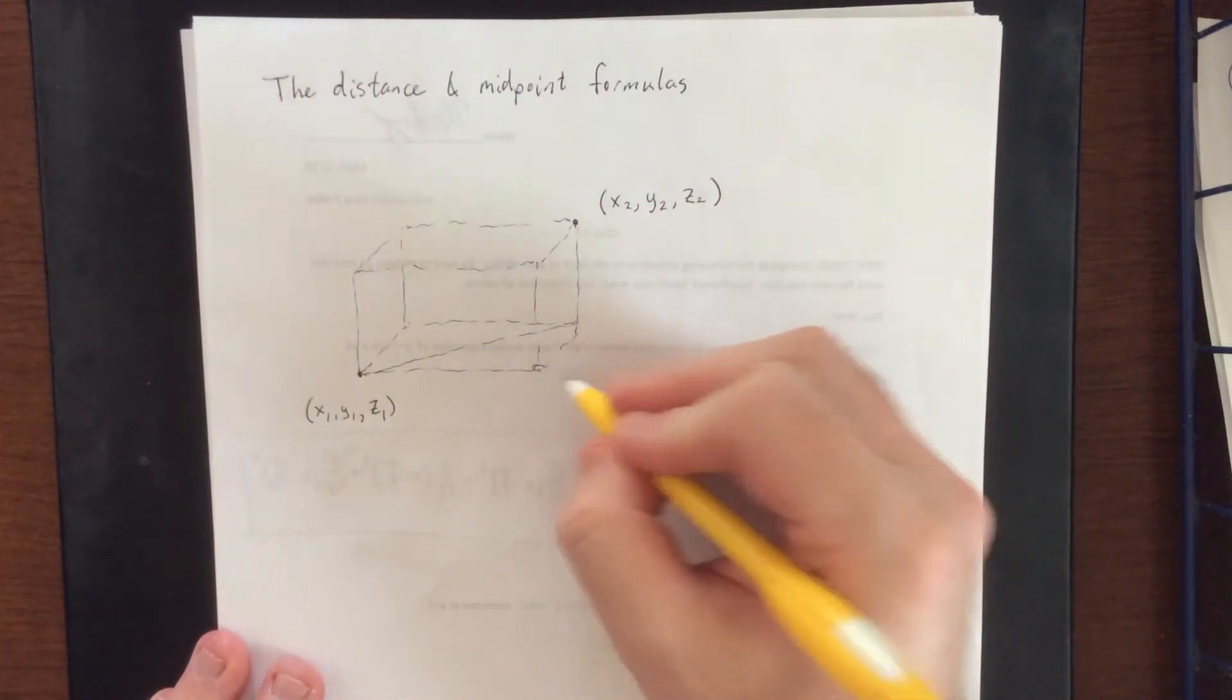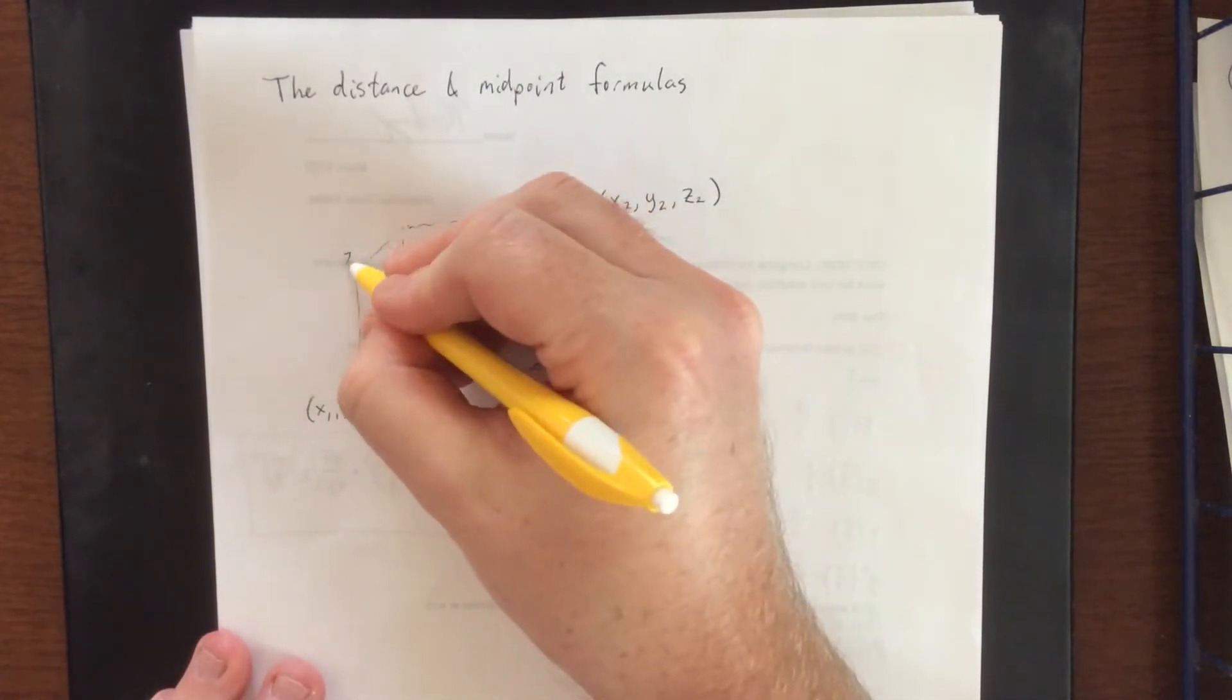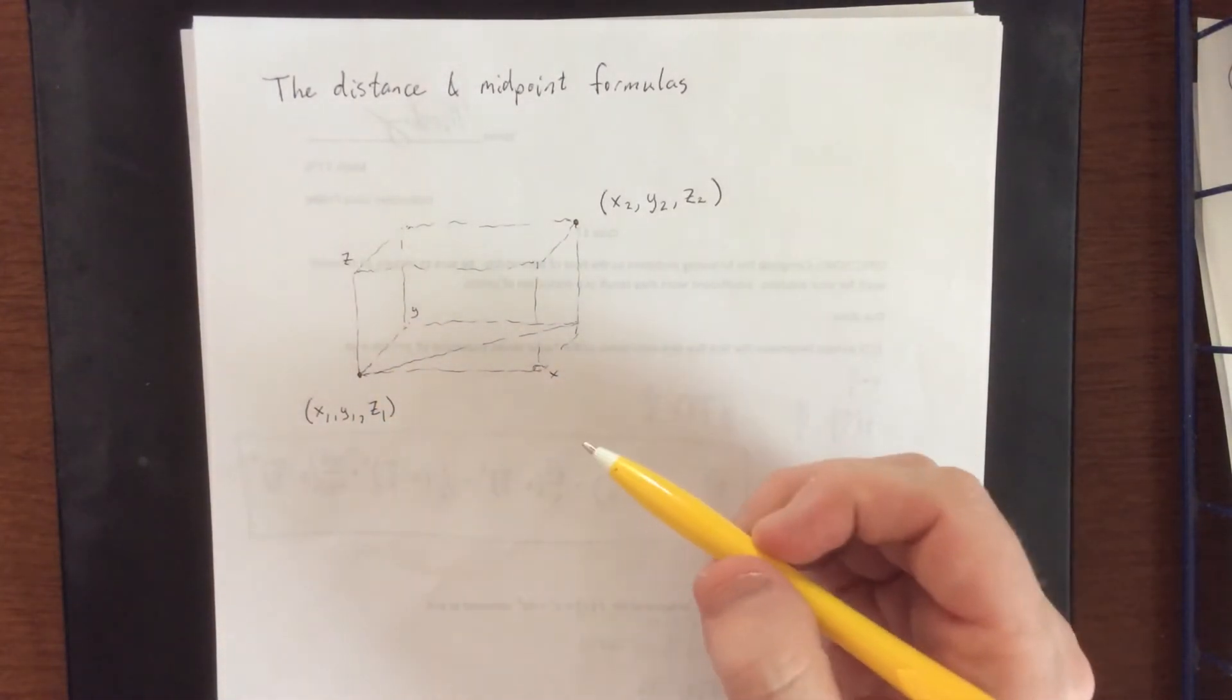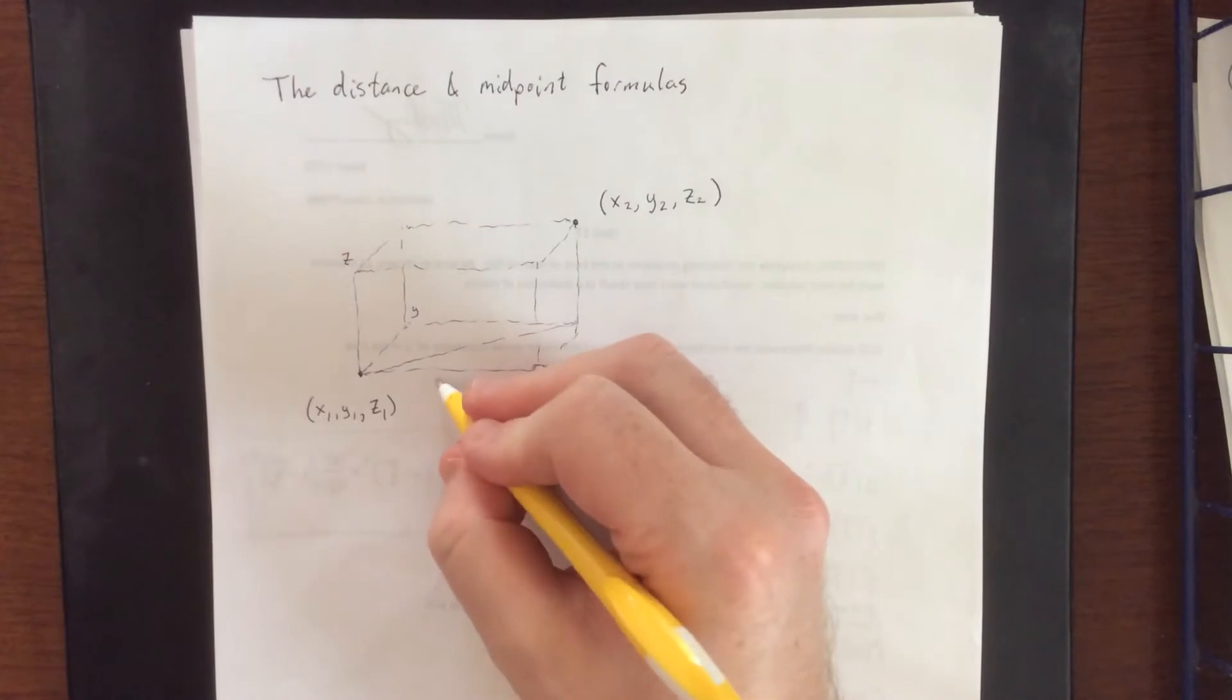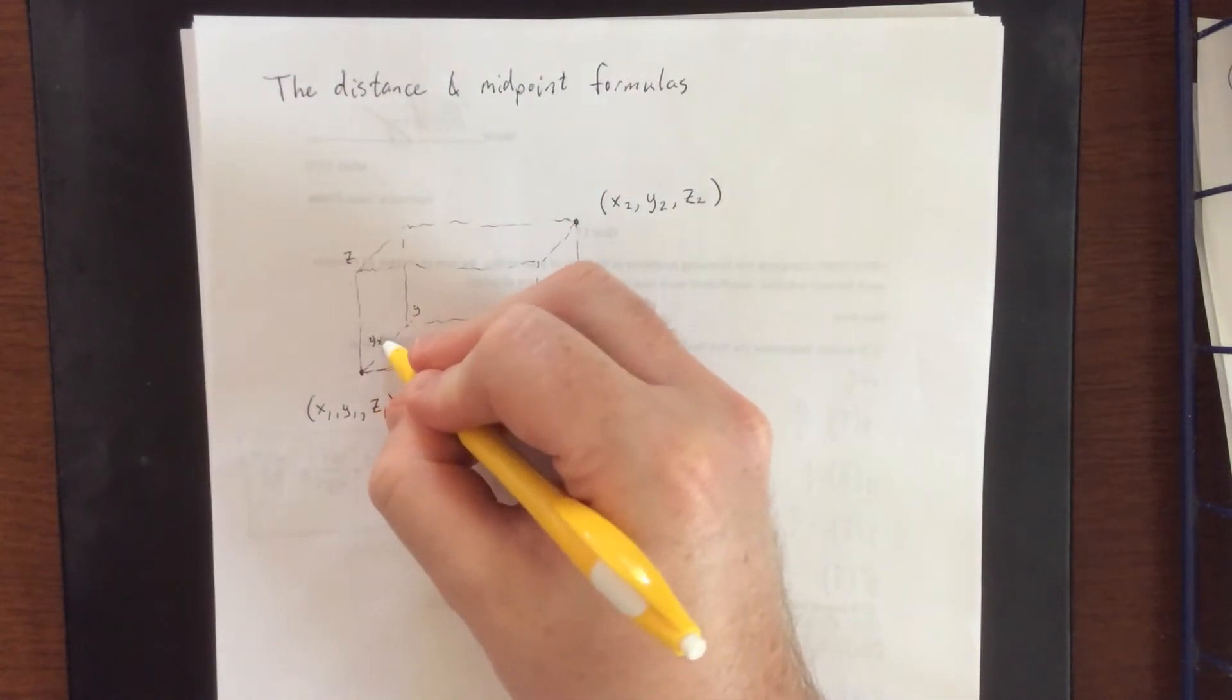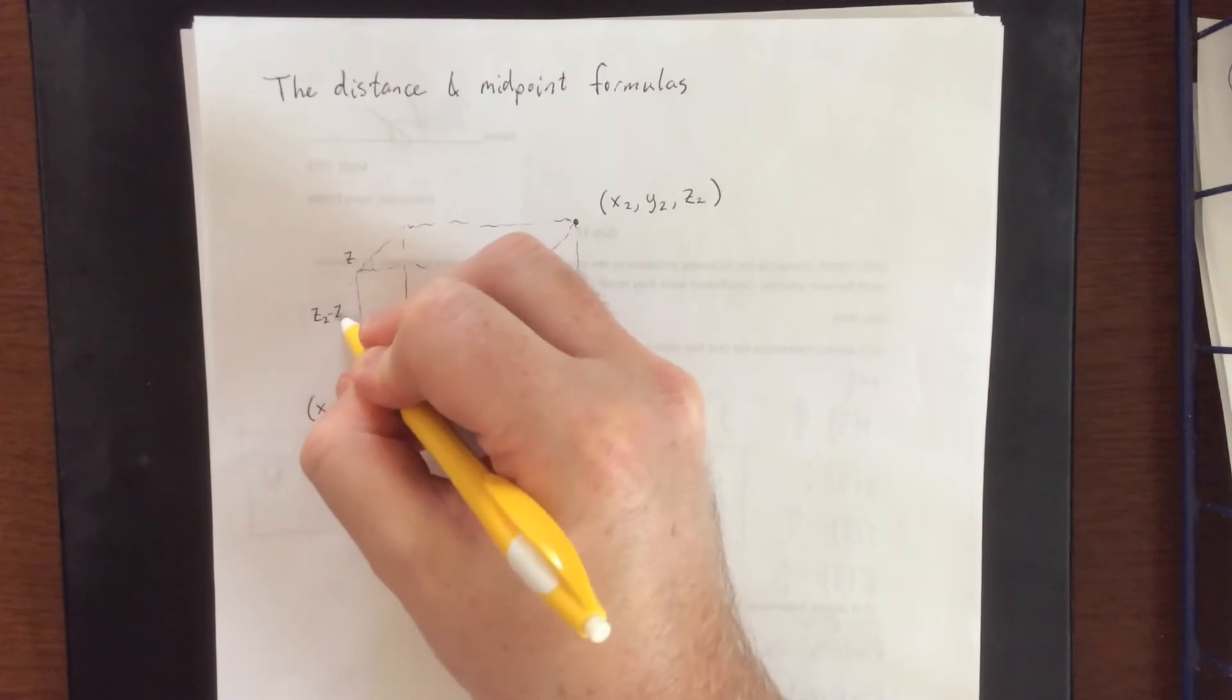If we were to set this up as an x-axis, y-axis, and z-axis—not necessarily having to be in that order—we would have a change in x, that's x₂ minus x₁, a change in y, that's y₂ minus y₁, and a change in z, that's z₂ minus z₁.